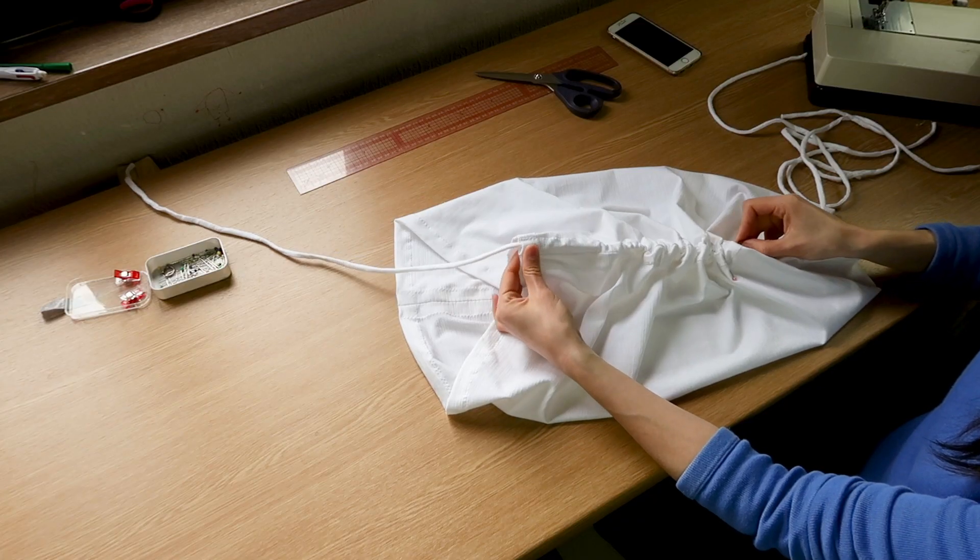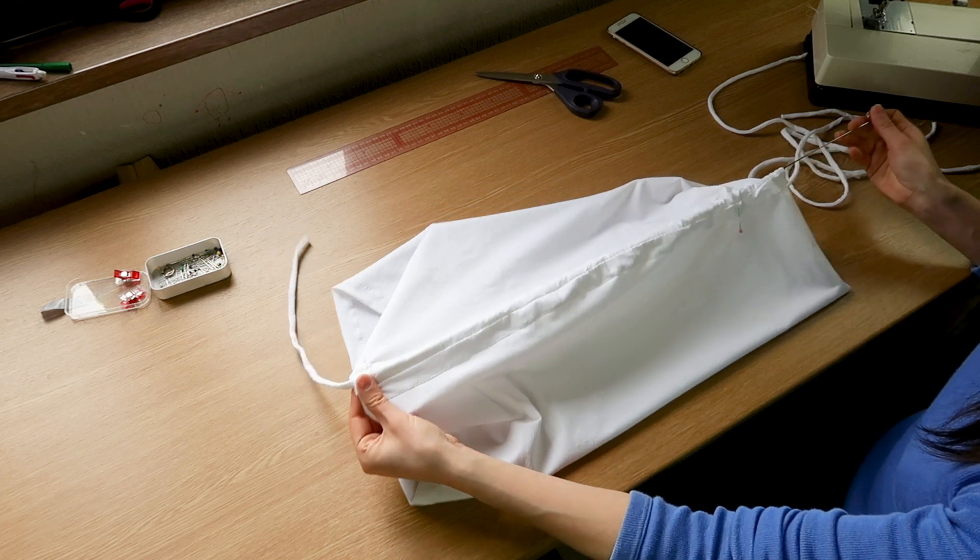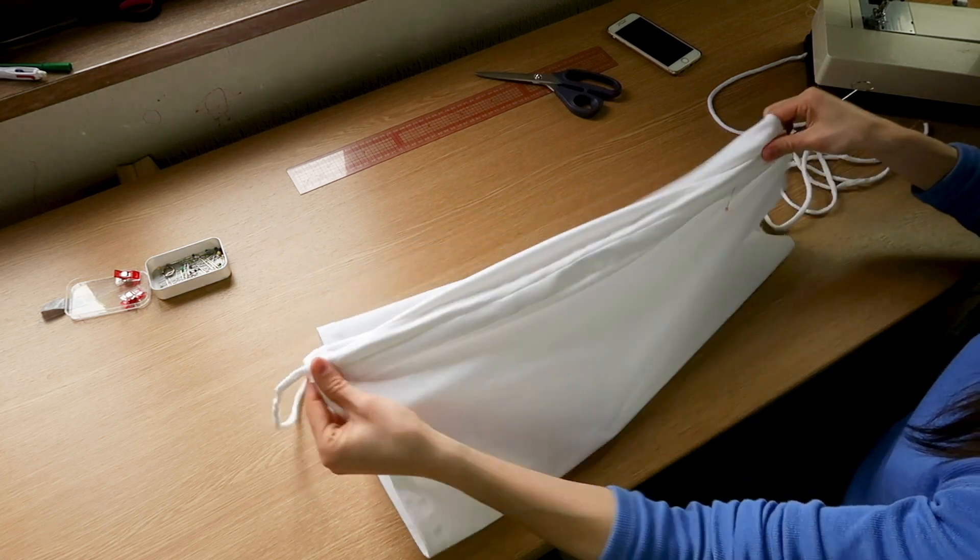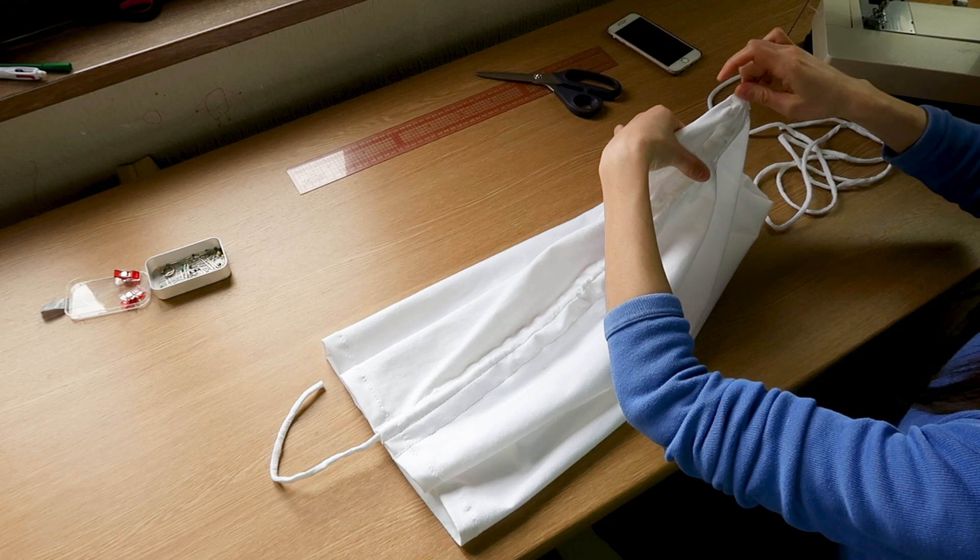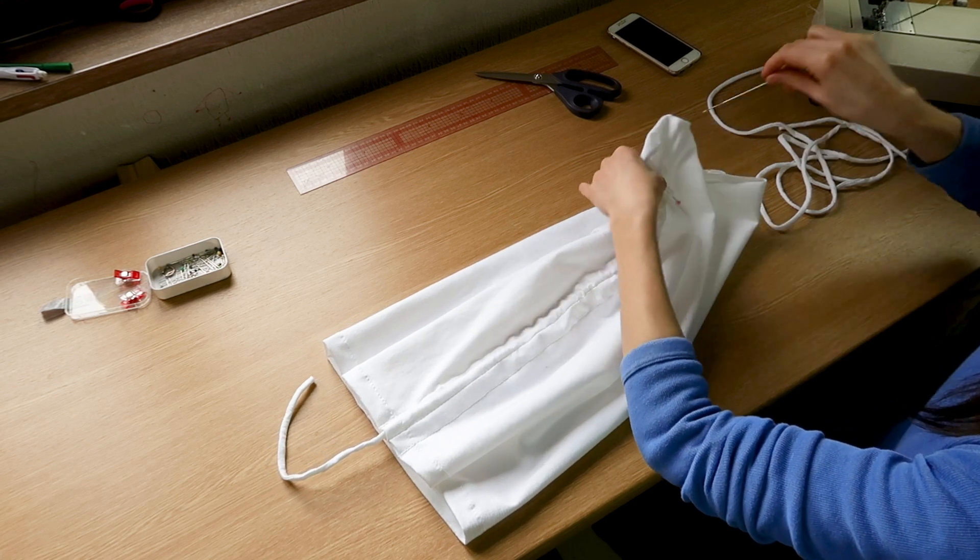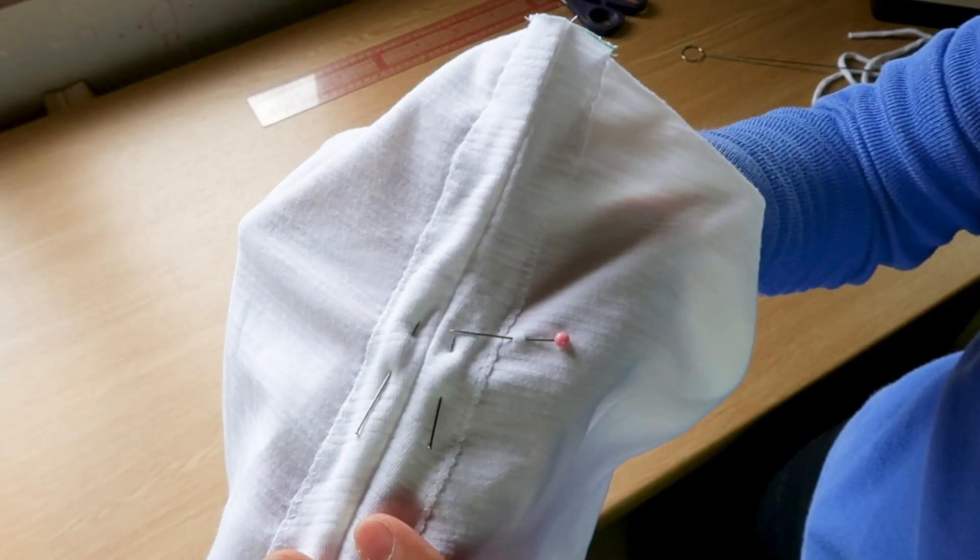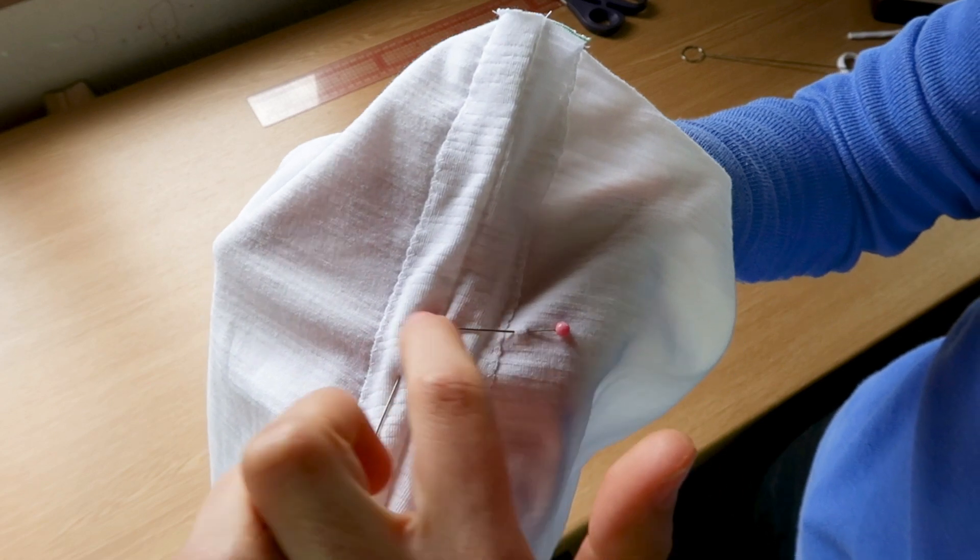Now I'm going to use my loop turner to slide the drawstrings up my drawstring channels. And here, careful, I'll try and stop the drawstrings about eight centimeters from the upper edge of the fabric and I'll sew them here.